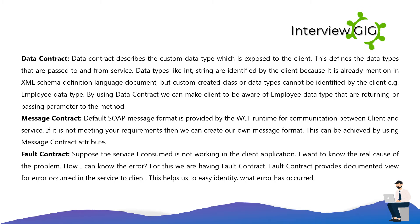Data Contract describes custom data types exposed to the client, defining the data types that are passed to and from a service. Data types like int and string are already identified by the client via XML Schema Definition language, but custom classes like an Employee data type cannot be identified by the client. By using a data contract, we can make the client aware of the Employee data type being returned or passed as a parameter. Message Contract: the default SOAP message format is provided by the WCF runtime for communication. If it does not meet your requirements, you can create your own message format using the MessageContract attribute.